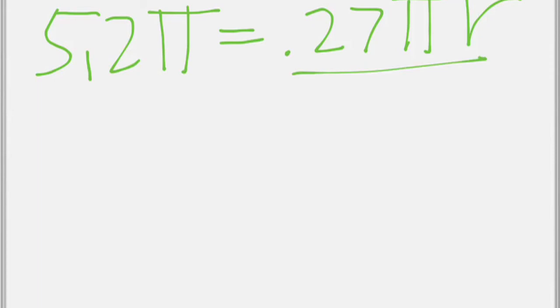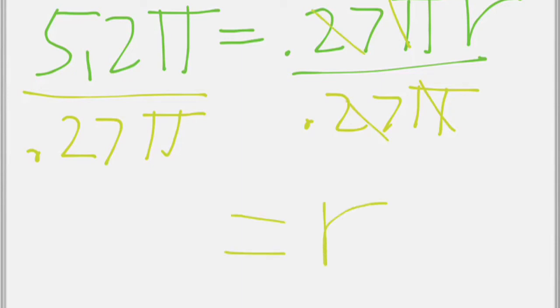I'm going to take that a couple slides over. What was that on the left? 0.27 pi r. Because we're trying to find our radius. So we divide both sides by 0.27 pi. And then divide this side by 0.27 pi. Arrr.